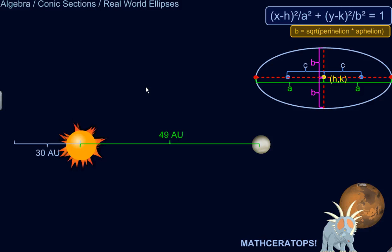So one classic, awesome example of ellipses in the real world is the orbit of planets.